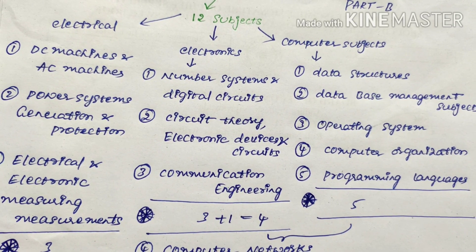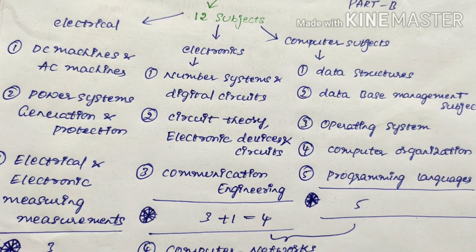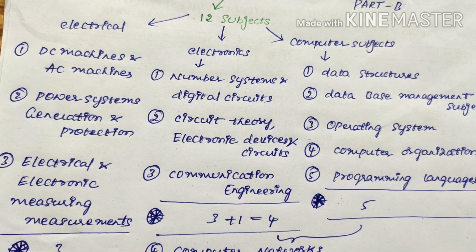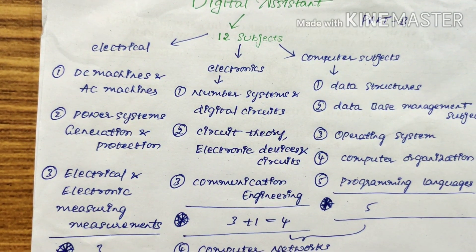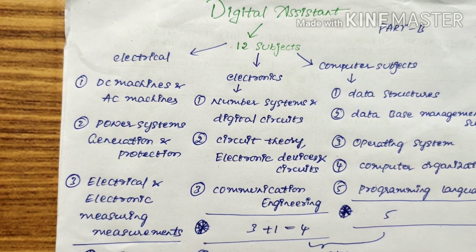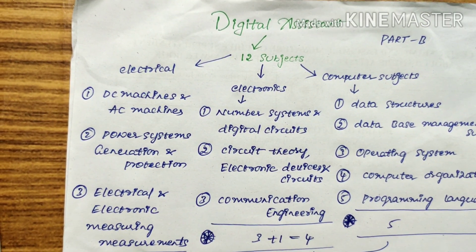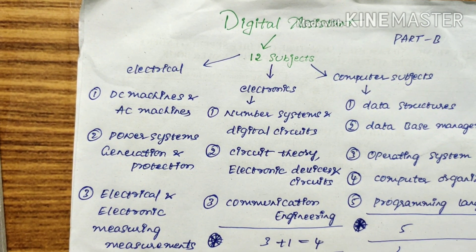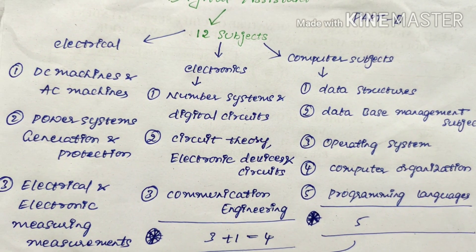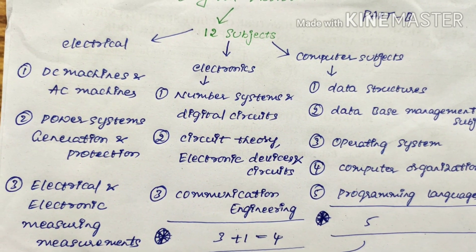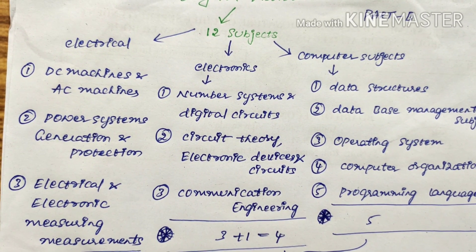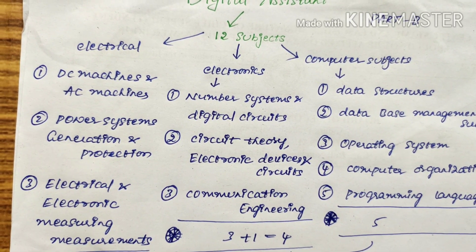Now, coming to each subject's syllabus explanation. For Data Structures, it is not a very deep subject here — just the basics like stacks, linked lists, trees, graphs, searching and sorting. For DBMS, we have to focus on database designing, data modeling, working with statements like DDL and DML, and functional dependencies — we have to concentrate more on those topics.